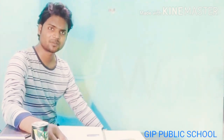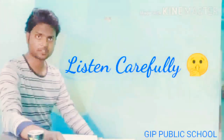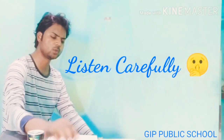The best and most user-friendly software is the operating system Windows 7. It is a software that acts as an interface between computer hardware and the user, and also manages the resources of the computer system and does many other things. Let us learn some features of Windows 7.